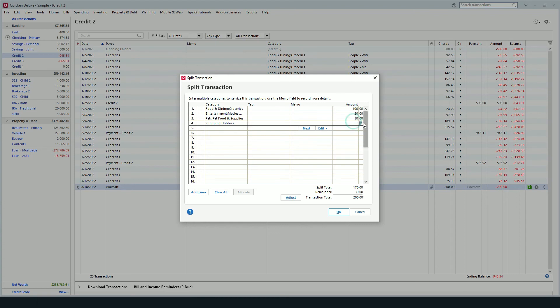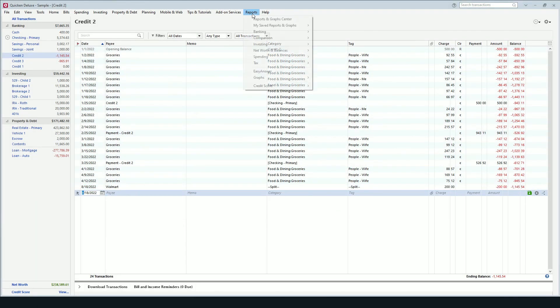You can change the total at any time by clicking this adjust button, which will add up all the lines and calculate the new total based on the line items that you've put in. Once you're done, click OK and enter to commit to the transaction and you're all set.